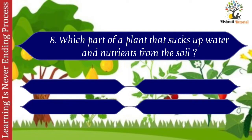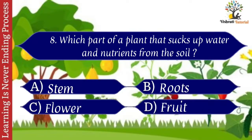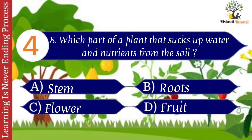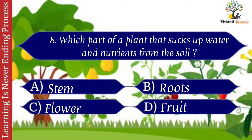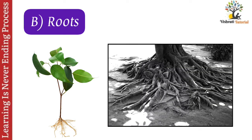Question number eight: which part of a plant sucks up water and nutrients from the soil? Options: A. Stem, B. Roots, C. Flower, D. Fruit. The correct answer is B. Roots. Roots is the part of a plant that sucks up water and nutrients from the soil.